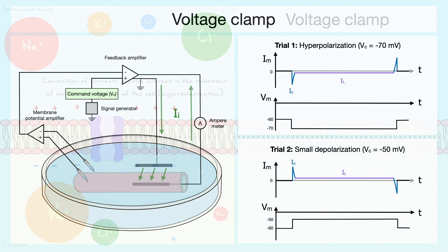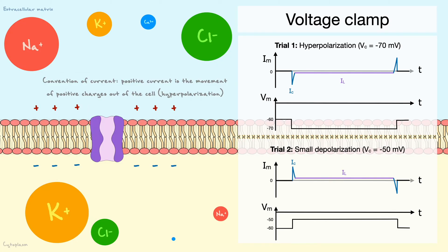Recall that our convention for current says that positive current corresponds to positive charges leaving the cell, which in essence corresponds to a hyperpolarization. Accordingly, negative current corresponds to positive charges entering the cell and depolarizing the cell.